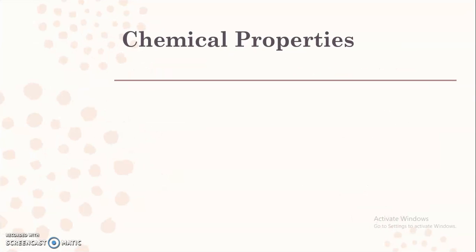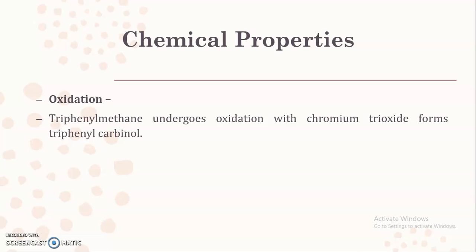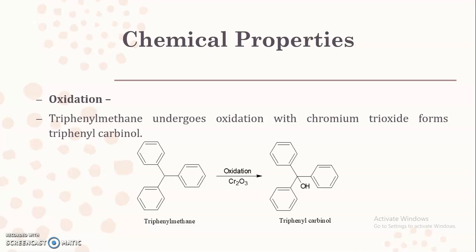The third chemical property shown by triphenylmethane is oxidation. Triphenylmethane undergoes oxidation in the presence of chromium trioxide (CrO₃), which leads to the formation of triphenylcarbinol. The carbon atom at the methane bridge position is oxidized, and a hydroxyl group is added — the alkyl group is converted into an alcoholic functional group — giving triphenylcarbinol. These are the three chemical properties shown by triphenylmethane.